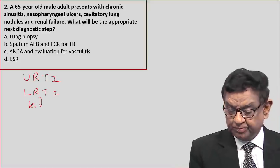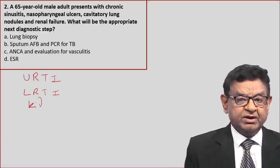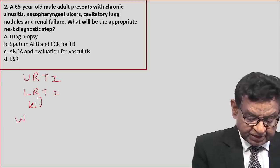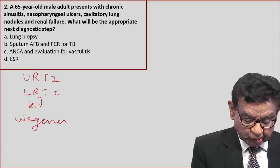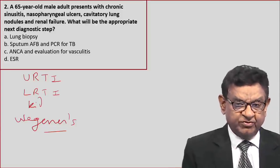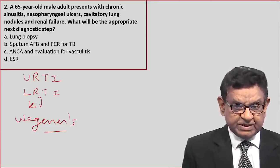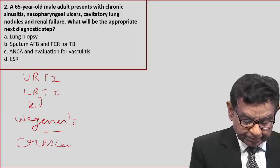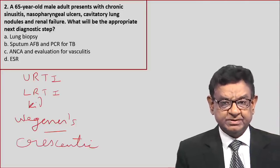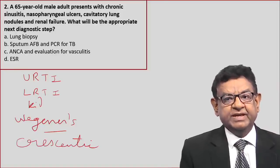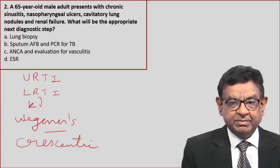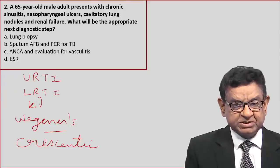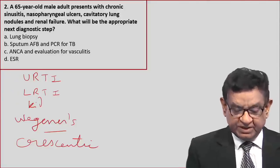This patient has got a triad of upper respiratory tract, lower respiratory tract, and renal involvement. This we typically see in Wegener's granulomatosis, which is a small vessel vasculitis. As far as kidney failure is concerned, it typically leads to crescentic type of glomerulonephritis, and due to the cavitative lesion the patient may even have hemoptysis — that is why it mimics tuberculosis also.